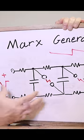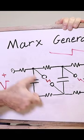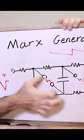It's beautiful! Marx generator is made of multiple similar stages of high voltage capacitors, resistors, and spark gaps.